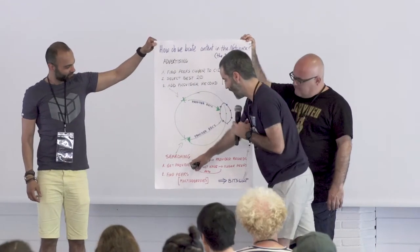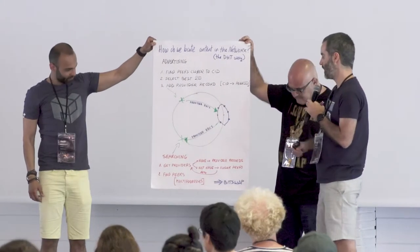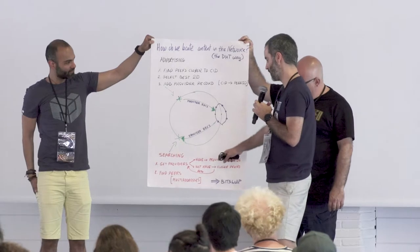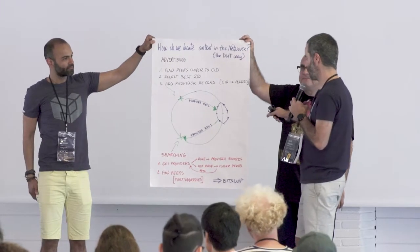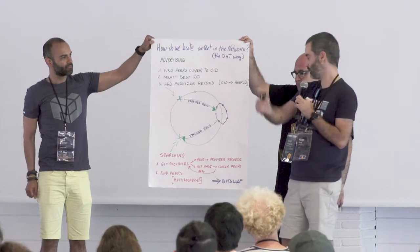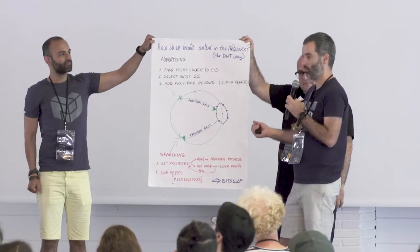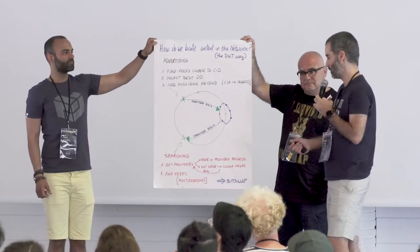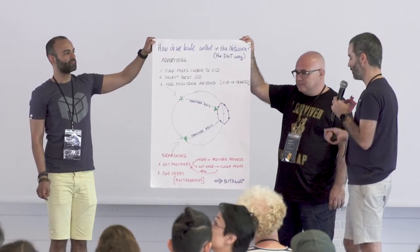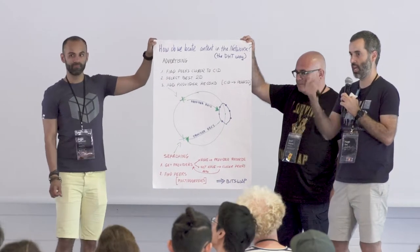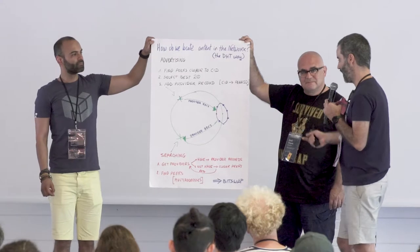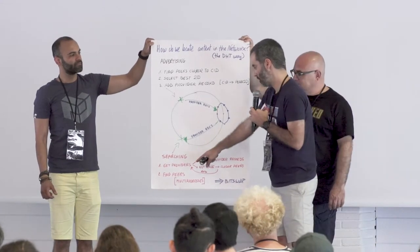On the searching side, first we get the providers, and this is an iterative process. We ask for providers and sometimes we get back that a peer has the providers. Sometimes a peer doesn't have the providers, but has some closer peers, so it sends back those peers and then we ask again for providers.